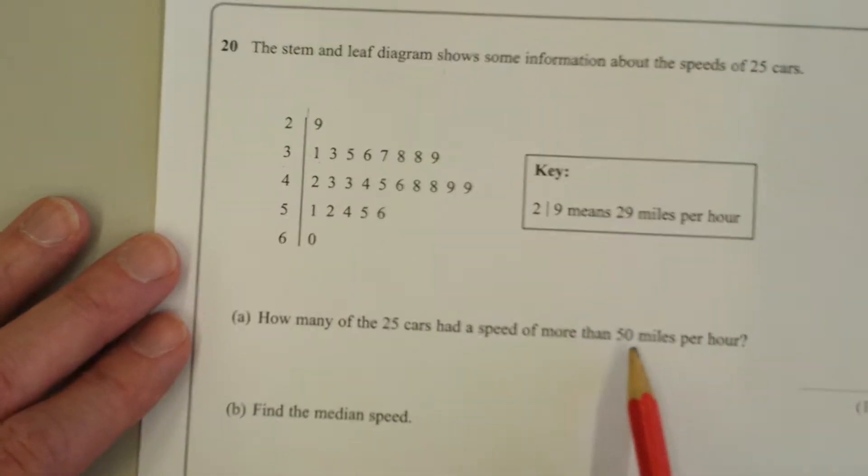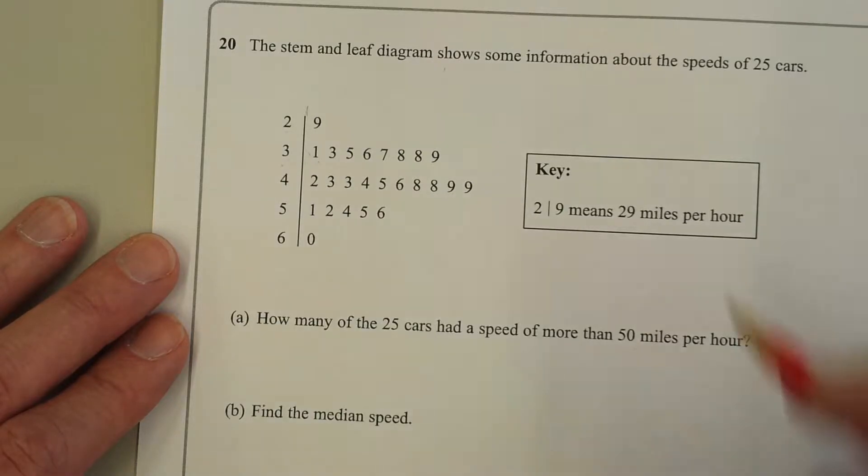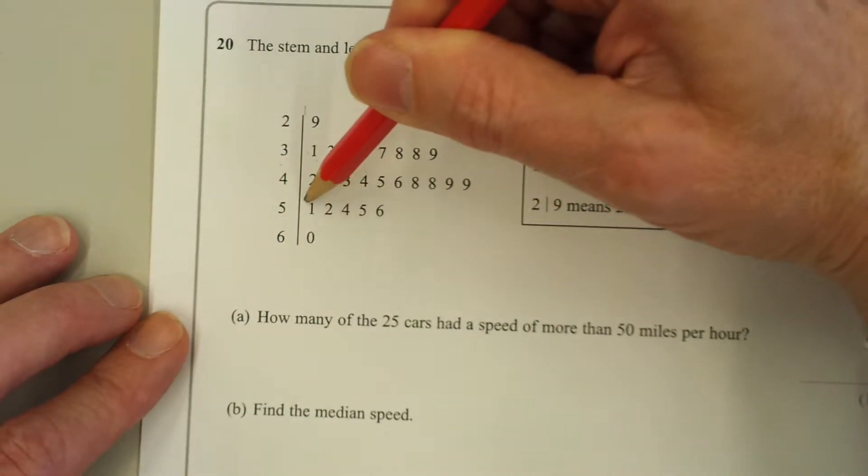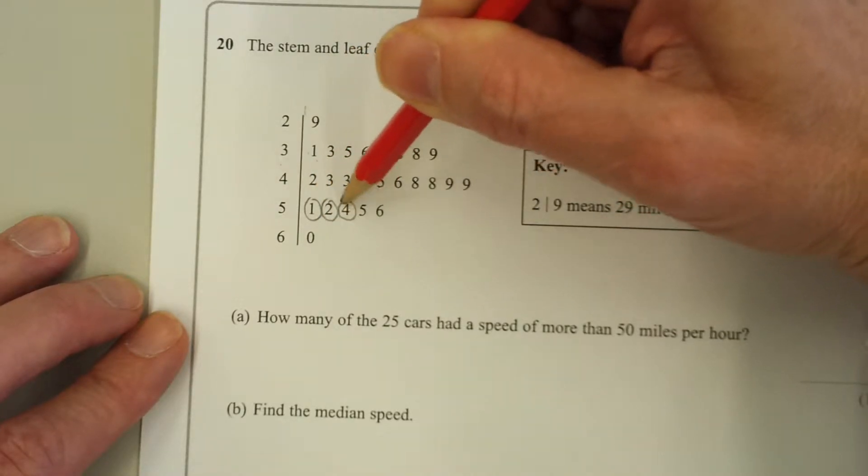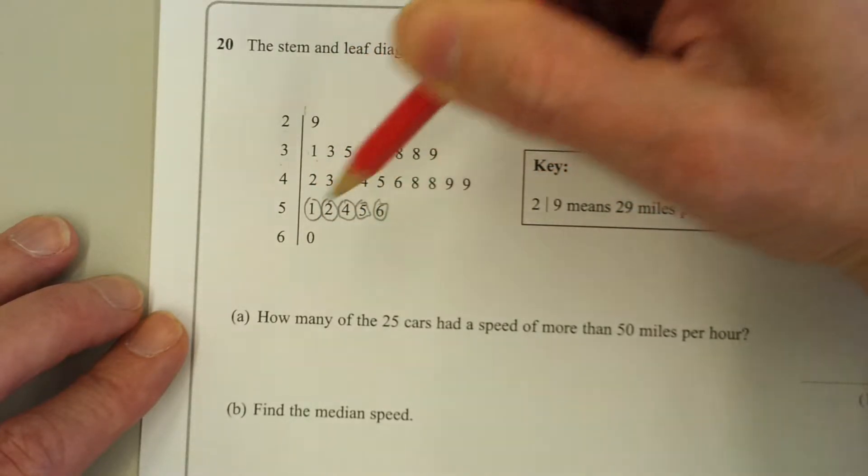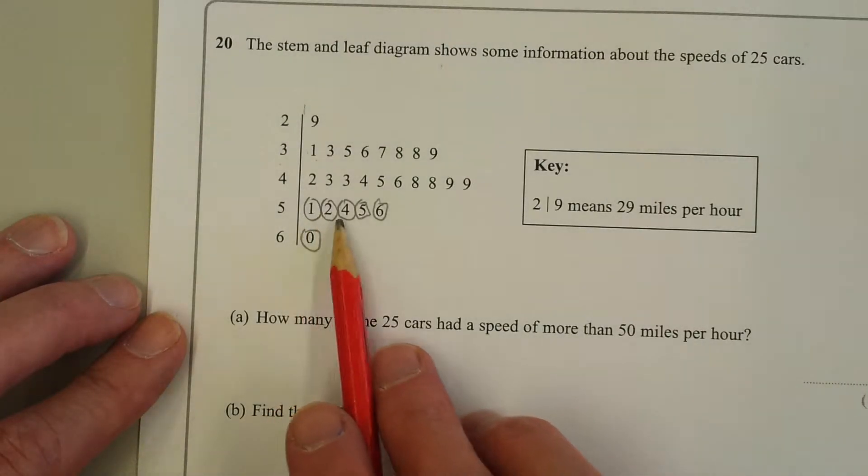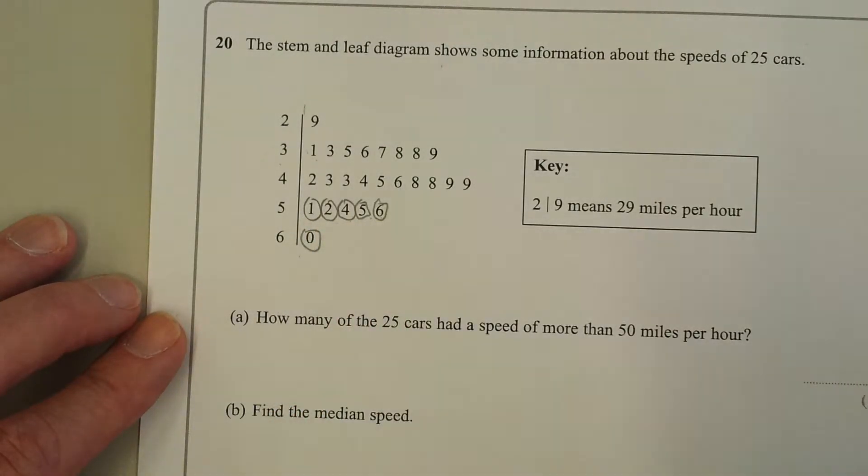We want more than 50 miles per hour. Looking here, we've got 51, that's 1, 52, 54, 55, 56, and 60. So how many of the 25 cars had a speed of more than 50 miles per hour? There's 1, 2, 3, 4, 5, 6. That's the answer.